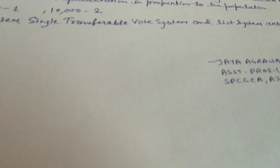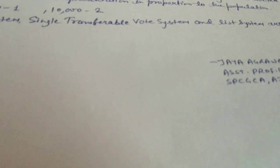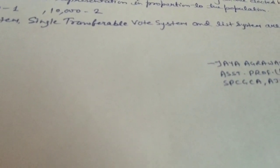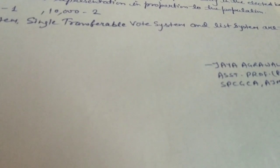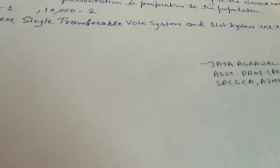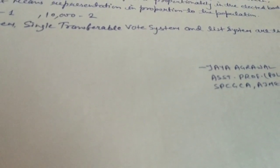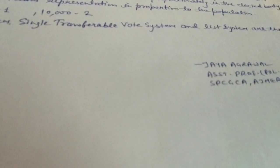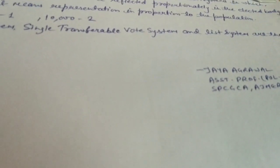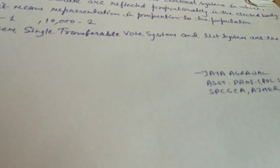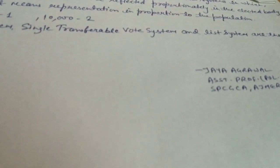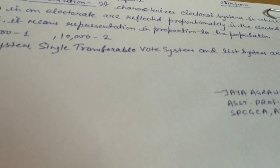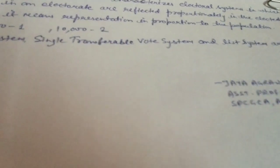In the List System, the required number is calculated and it is seen from the list which candidates have secured the most votes. At the end, those candidates who have secured the most votes are declared winners. That's all for today from my side, thank you very much.